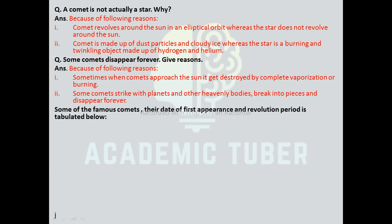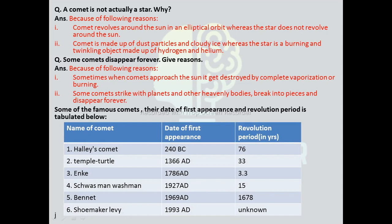Some famous comets with their first appearance and revolution period: Halley's Comet was first seen in 240 BC and its revolution period is 76 years. Temple-Tuttle was first seen in 1366 AD and its revolution period is 33 years. Encke was first seen in 1787 AD and its revolution period is 3.3 years. Schwassmann-Wachmann was first seen in 1927 AD and its revolution period is 15 years. One comet was first seen in 1969 AD and its revolution period is 1,678 years. Another comet was first seen in 1993 AD and its revolution period is unknown because it collided with Jupiter in 1994.